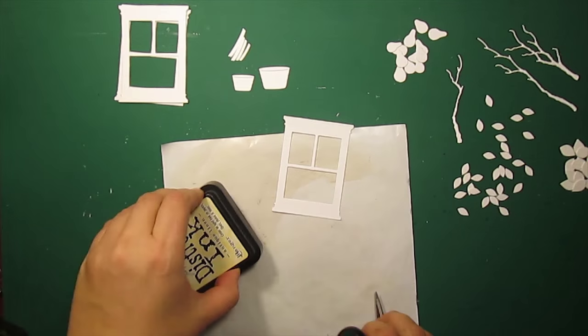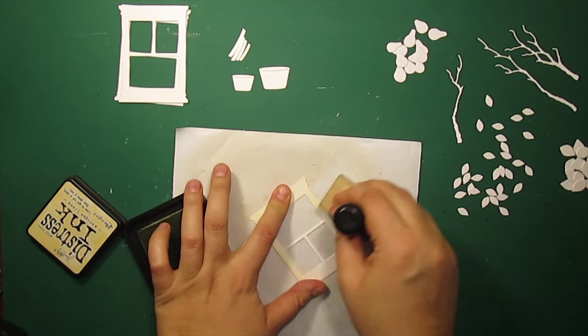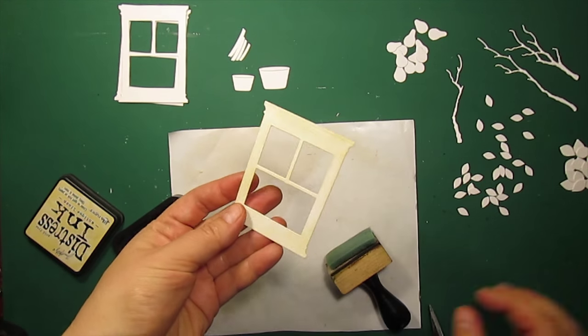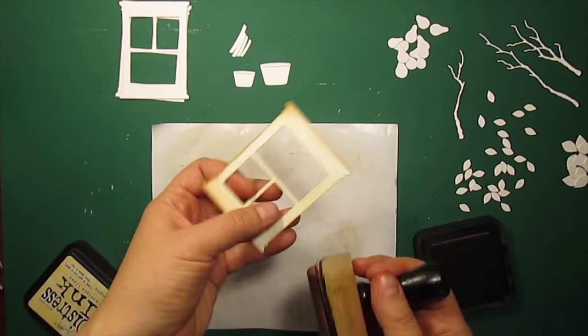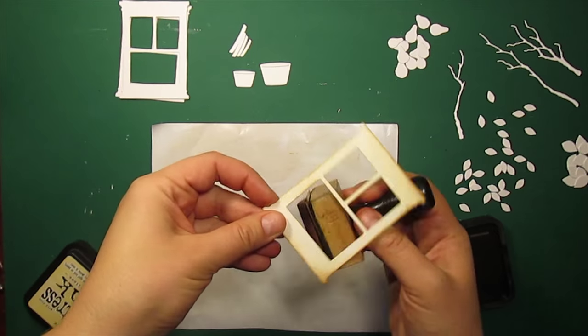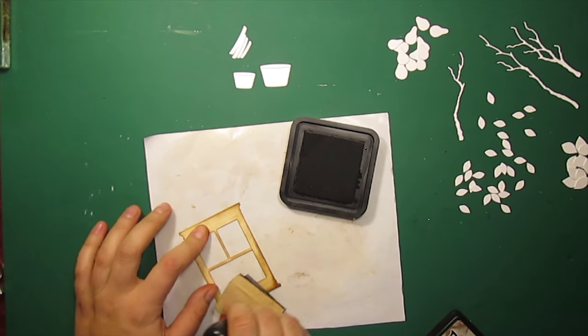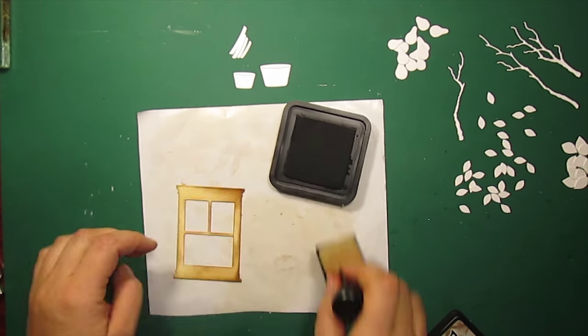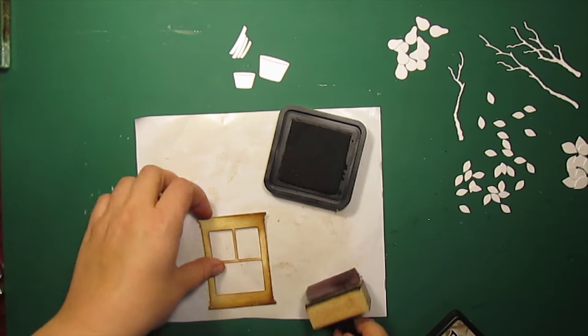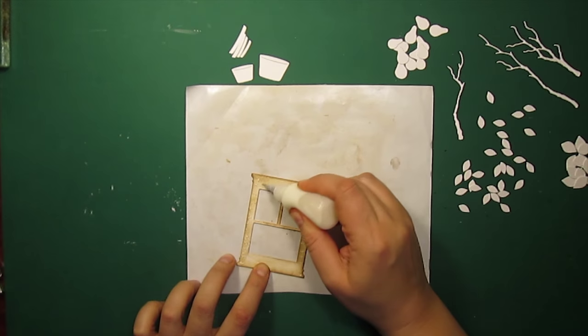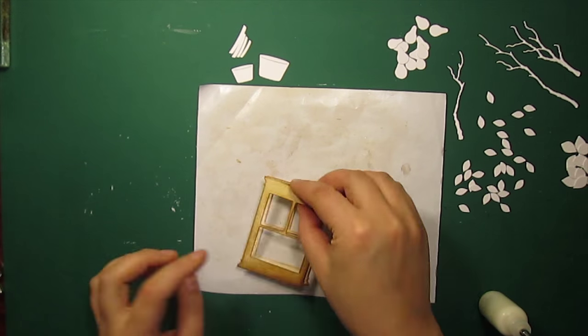I'm trimming the window frame and again I'm inking the window with antique linen, then vintage photo and gathered twigs. I'm gluing three window die cuts, one on top of another, for extra dimension.